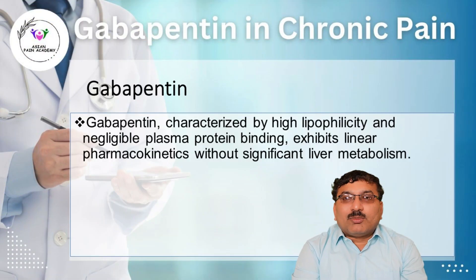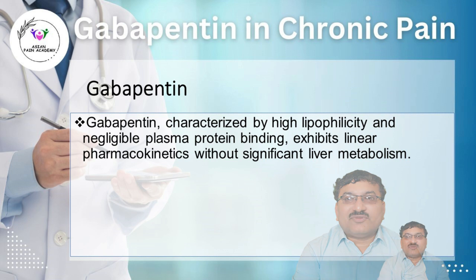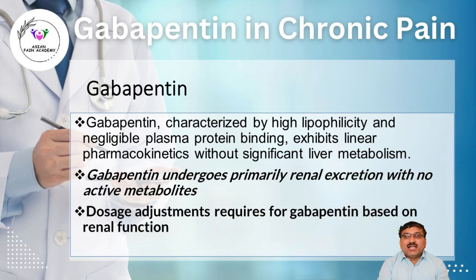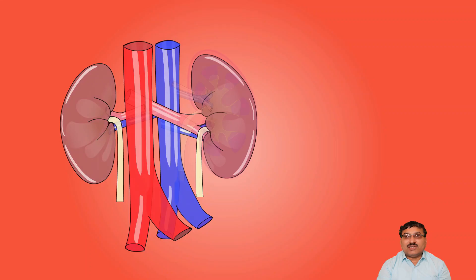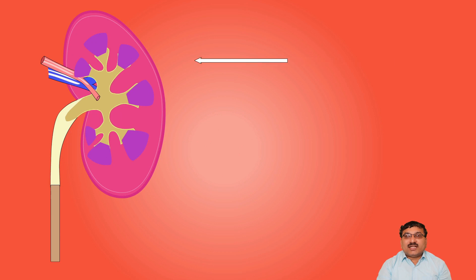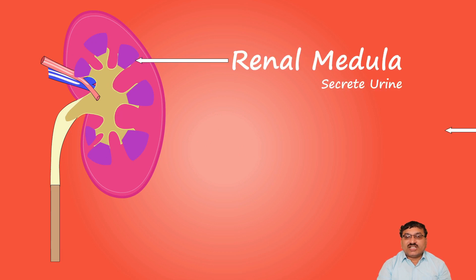Regarding the pharmacokinetics of pregabalin and Gabapentin, a very important factor is that the drug does not have any metabolism in the body. It is absorbed and then excreted unchanged in the urine. Therefore, in patients who have chronic kidney disease, the drug requires a dosage reduction.